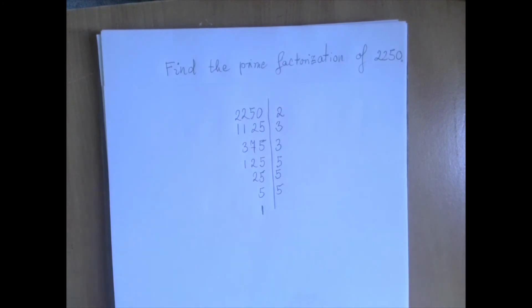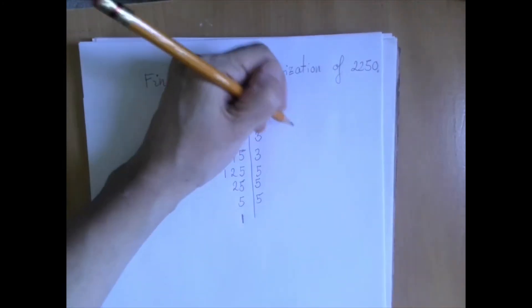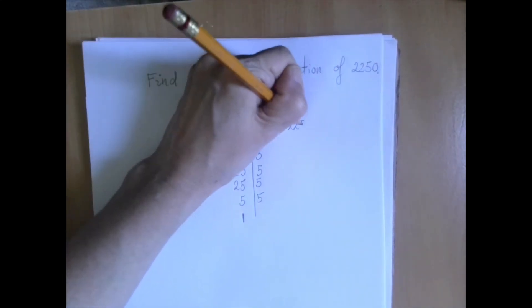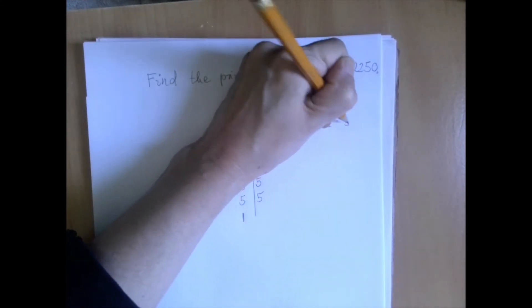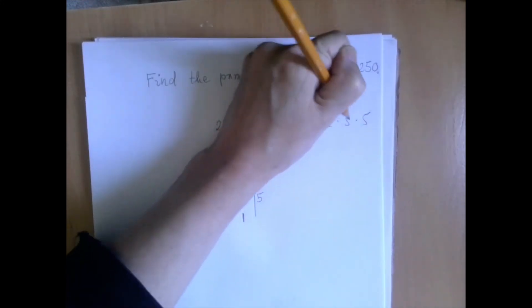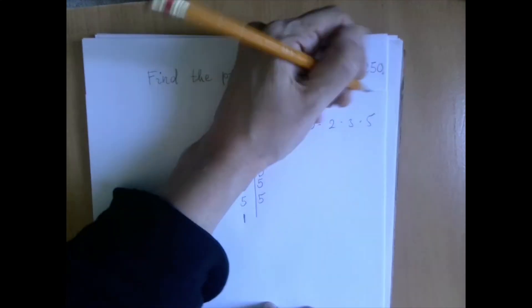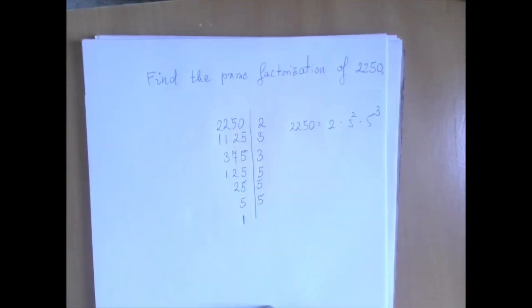Usually we use an exponential form. So we use a form such as 2250 equals 2 times 3 squared times 5 cubed. We organize the prime factors in order, and then there is just one 2, but there are two 3s and three 5s. So that here is the prime factorization.